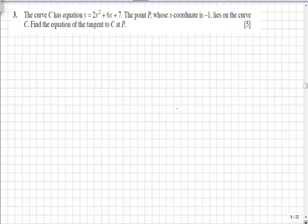In question 3, we're asked to find the equation of the tangent to the curve C at the point P given. In the first instance, we need to differentiate the equation of the curve. So dy by dx will equal 4x plus 6.